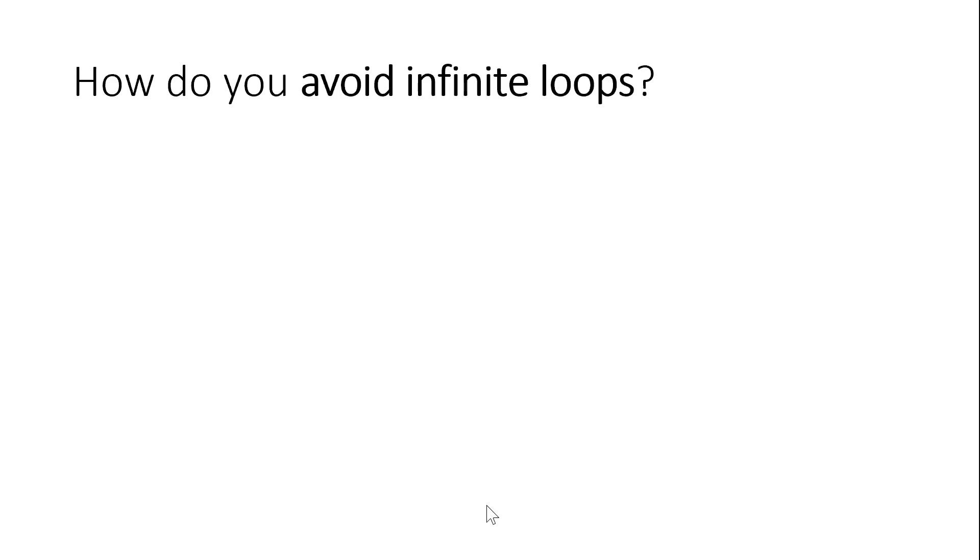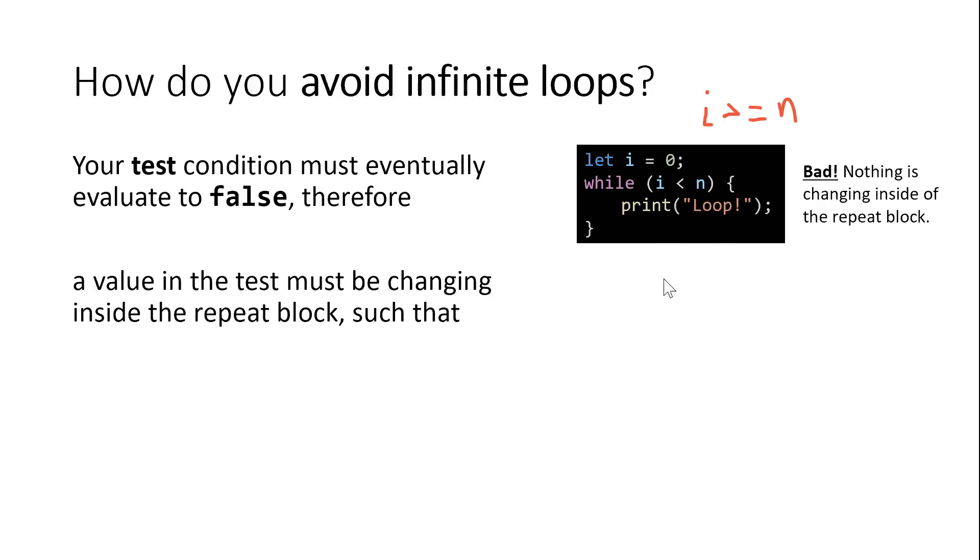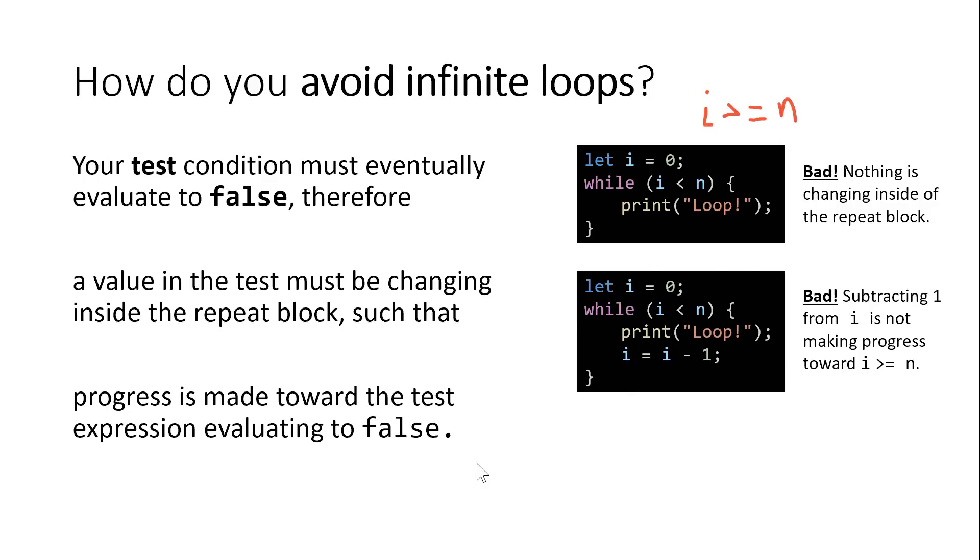So how can you avoid writing an infinite loop? Well, ultimately, the test condition of our while loop must become false. So i is less than n. If that's true, we're going to go into the repeat block. So when this is false, we're going to stop looping. And so what would make this condition false? The opposite of this statement would make it false. So what is the opposite of i is less than n? That is i is greater than or equal to n. So at some point, something must change such that i becomes greater than or equal to n for this loop to stop running. But notice in this case, it's bad because nothing is changing inside of the repeat block to cause that to happen. But it's not only that something that one of these terms must be changing from inside of the repeat block, we must be making forward progress towards that expression becoming false. We don't want to be moving away from that expression becoming false.